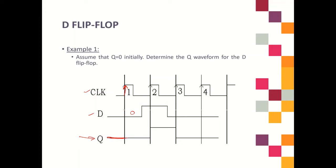Carry the value 0 until clock number 2. At clock number 2, D has changed to 1, so Q also becomes 1. At clock number 3, D is equal to 0, so Q also equals 0. Same goes for clock number 4 — D is equal to 0, so Q is also equal to 0.